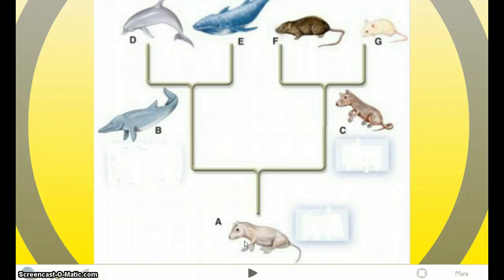But a Shared Derived Character would be Flippers for D and E, because their oldest ancestor A did not have Flippers, but their most recent common ancestor B does have Flippers.